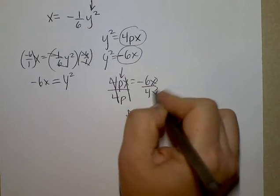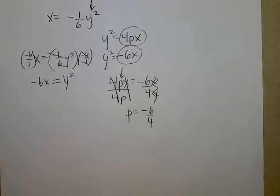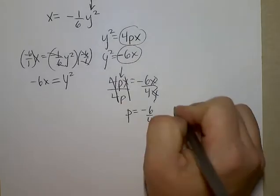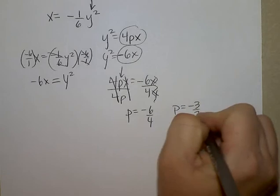The x's cancel. If you're poor at reducing fractions, right now type in negative 6 divided by 4 into your calculator. Hit math, fraction, enter, enter, and you'll see that this reduces to negative 3 halves.